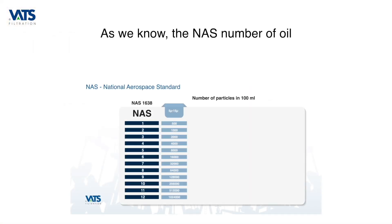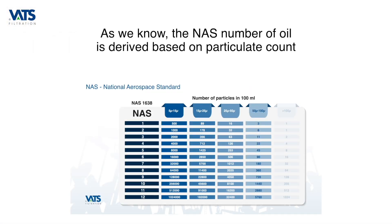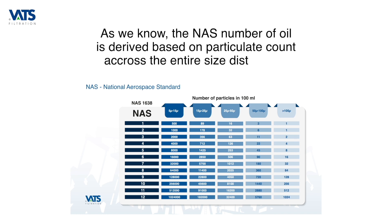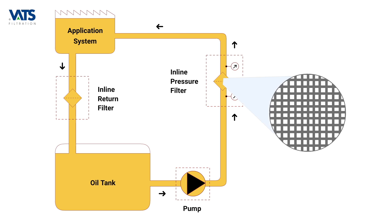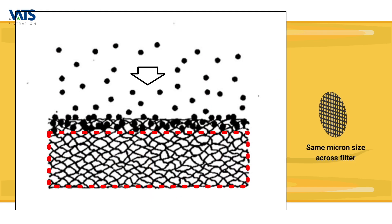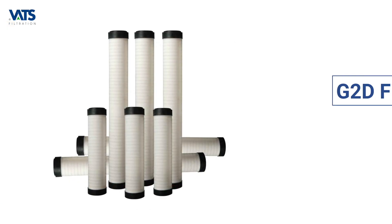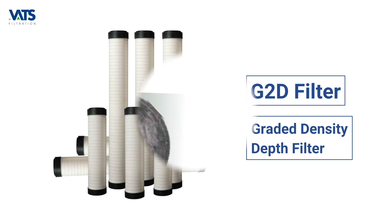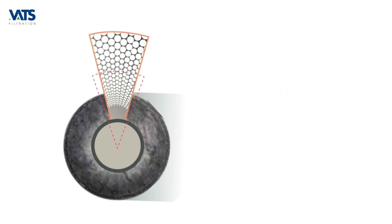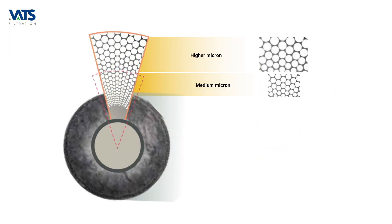As we know, the NAS number of oil is derived based on particulate counts across the entire size distribution, and this cannot really be achieved by using conventional inline filters or even true density depth filters. It is only such a G2D filter which can actually bring down the NAS level substantially.